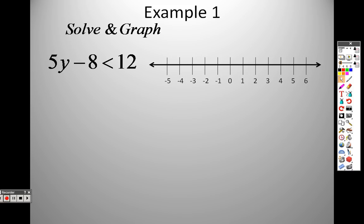You solve them just like you solve equations. Forget that there's even a different sign there. So if you were to solve this like an equation, how would you get y by itself? You would add 8 to both sides. Minus 8, so we add 8. 12 plus 8 is 20. The 8's cancel out, so we have 5y is less than 20.